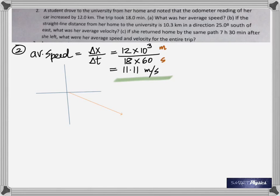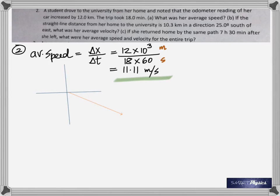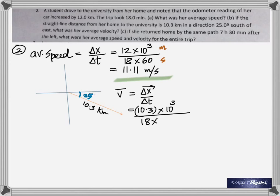In part b, if the straight-line distance was 10.3 kilometers in a direction 25 degrees south of east — south of east means you go from east toward south, so that angle is 25 degrees. The average velocity is total displacement divided by total time. Change that into meters by multiplying by 1000, and time again is 18 minutes converted into seconds, and you get your answer.